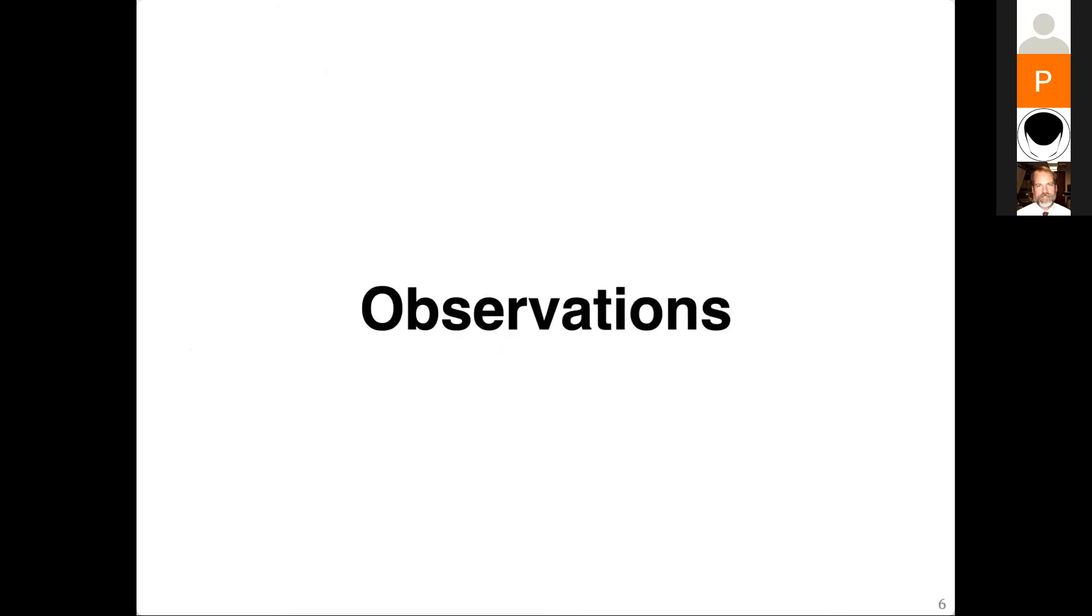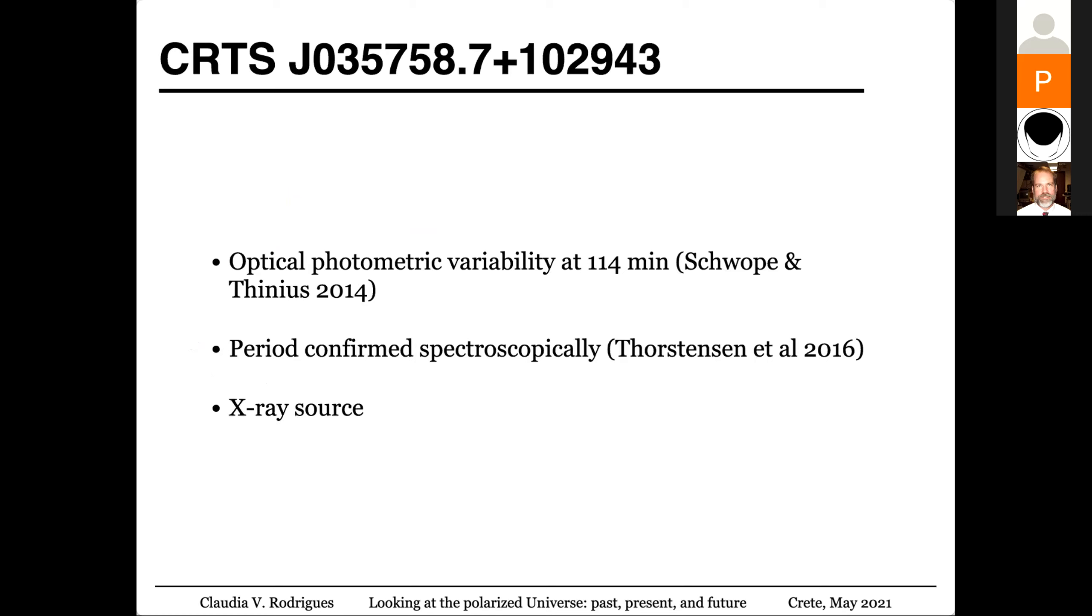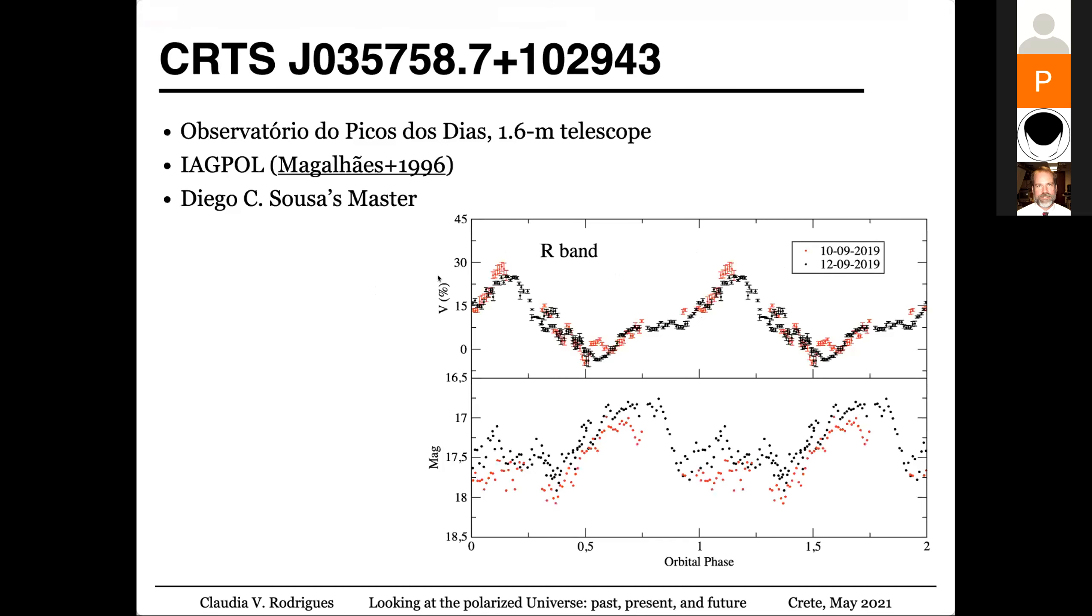So I will show you some examples of recent observations. I'm not going to say the name of this object. You can see it's an object that we knew already that it was a polar by the photometric variability. And here, I show you the kind of observations that you can do at Observatory do Pico dos Dias, Brazil, using the IAG polarimeter made by Magalhães and collaborators. So we have a system that varies with around two hours.